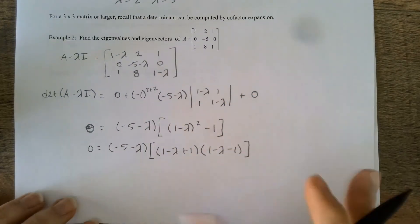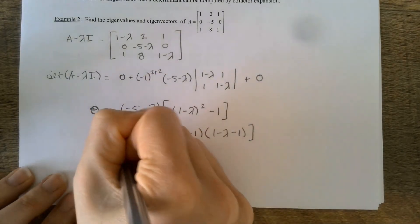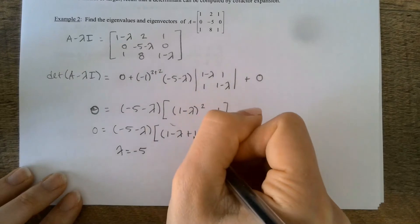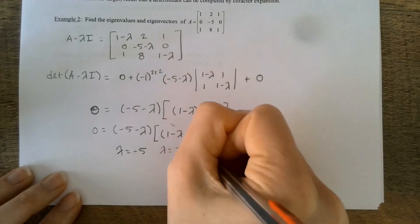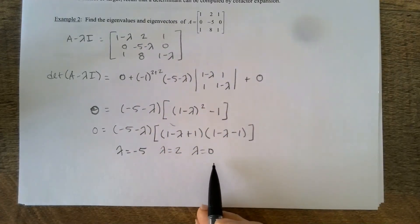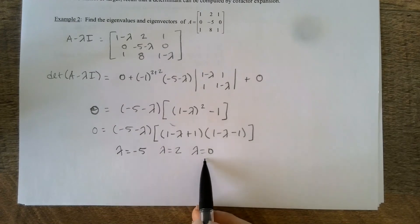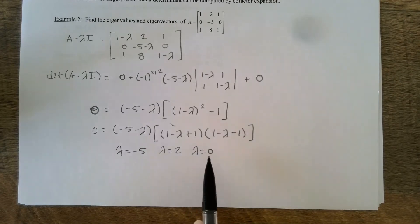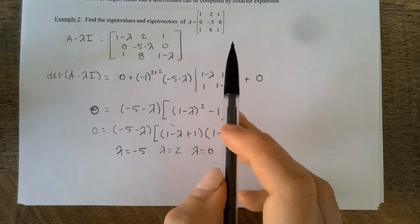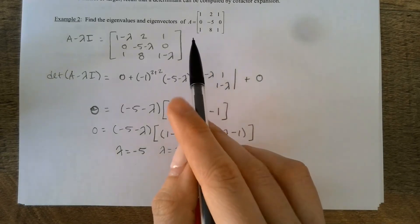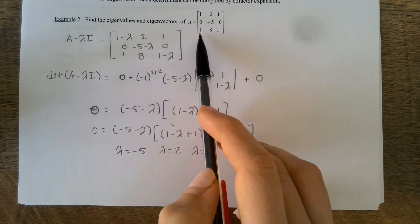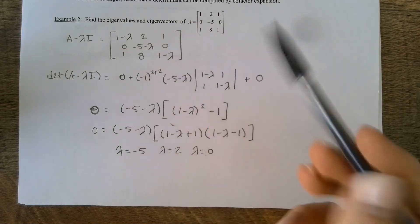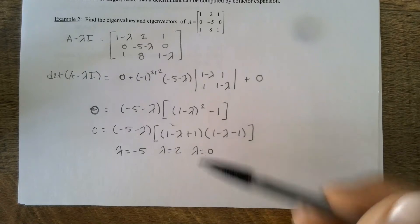Now I have three separate factors for my three eigenvalues. I get lambda equals negative five. The next factor: (one minus lambda plus one) gives two minus lambda, so lambda equals two. And (one minus lambda minus one) gives negative lambda, so lambda equals zero. Remember it's okay for lambda to equal zero — it is not okay for us to get zero as an eigenvector, but zero is a valid eigenvalue. It indicates that two columns were linearly dependent, which you can verify by looking at columns one and three.